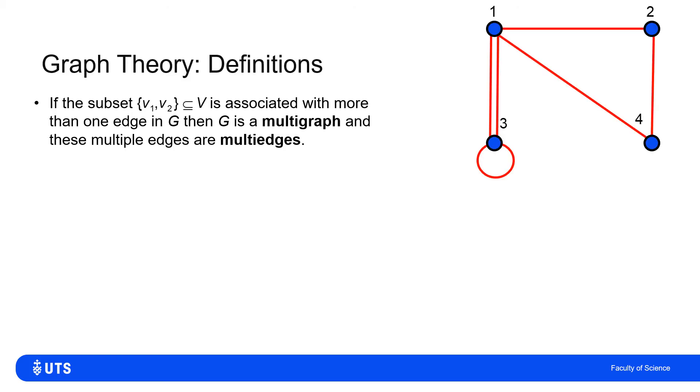So for example, this one here, which was a similar graph to what we previously saw, except the edge 1,3 appears twice. 1,3 is then a multi-edge, making this a multi-graph.